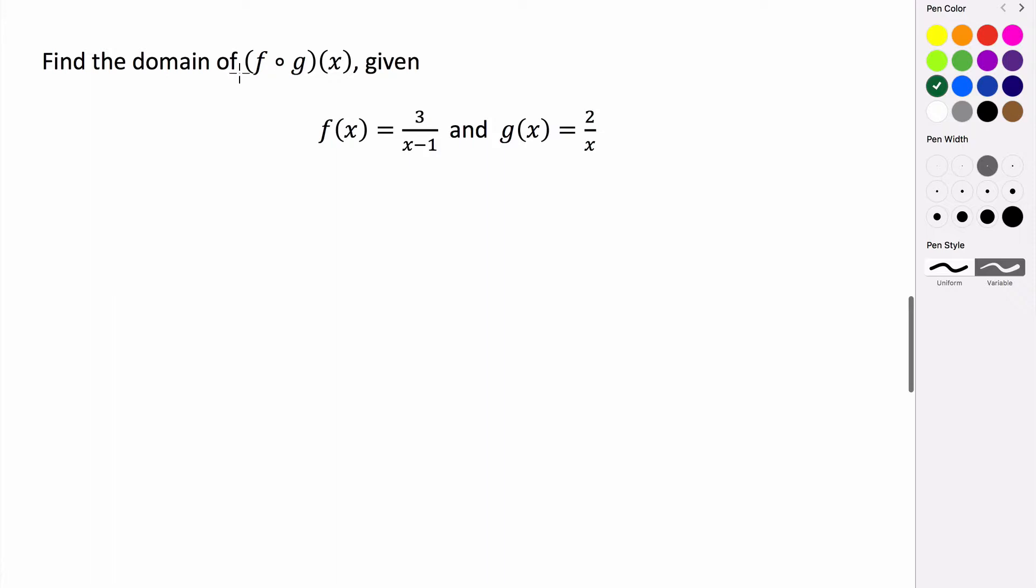We want to find the domain of this function f composed with g of x when we're given that f of x is 3 over x minus 1 and g of x is 2 over x.